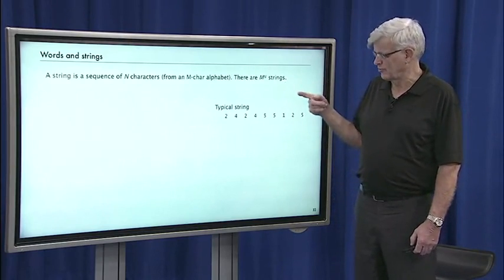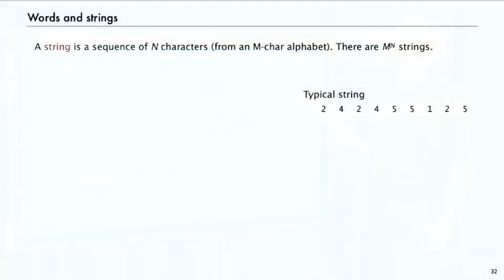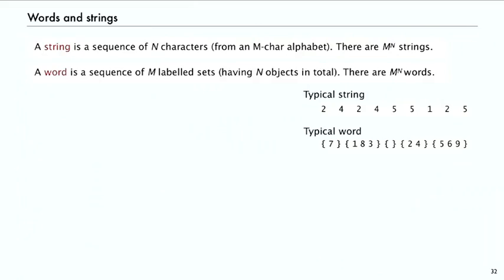Last time we talked about strings. A string is a sequence of N characters drawn from an M character alphabet, so there are M^N different strings. This time we're talking about that same object, but we're looking at it as a word. A word is a sequence of M labelled sets that have N objects in total. There are also M^N words, so it's a sequence of sets.